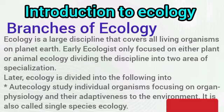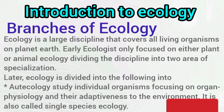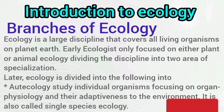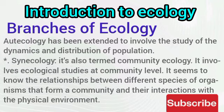Let's talk about the branches of ecology. Ecology is a large discipline covering all living organisms on planet earth. Early ecologists divided the discipline into two: plant ecology and animal ecology. Later, this field was divided into autecology, or species ecology, and synecology, or community ecology. Autecology studies individual organisms focusing on behavior, physiology, and adaptation to their environment. Synecology, also called community ecology, involves ecological studies at the community level, seeking to understand the relationships between different species and their interaction with their physical environment.